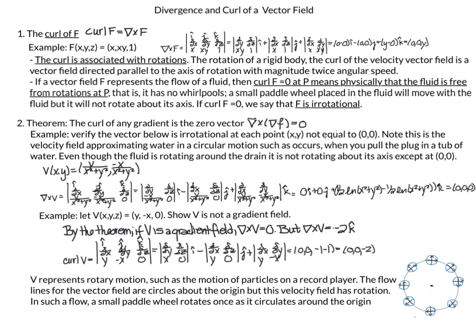When we take the curl of v, we have the i, j, k direction vectors, then d/dx, d/dy, d/dz, then our first coordinate x/(x²+y²), our second coordinate -x/(x²+y²), and no third coordinate so that equals 0. We do the calculations and we see that the curl of v is equal to 0 — so this pulling-the-plug-out-of-a-tub scenario actually has no rotation associated with it.